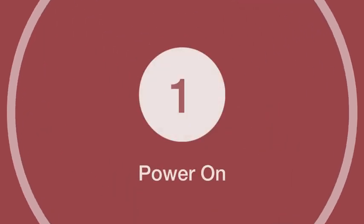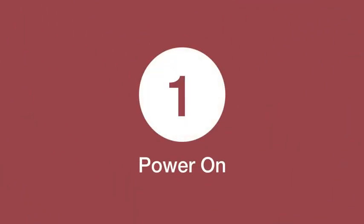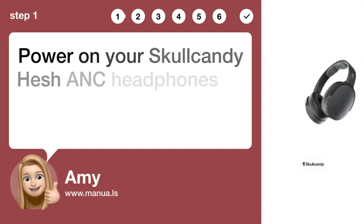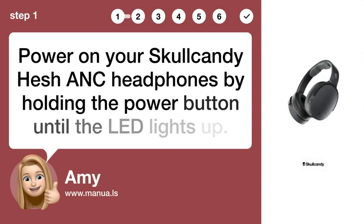Step 1: Power on. Power on your Skullcandy Hesh ANC headphones by holding the power button until the LED lights up.